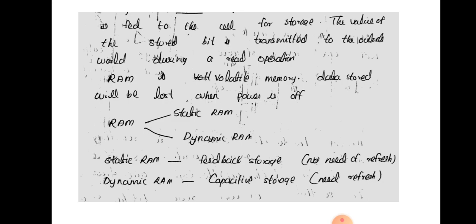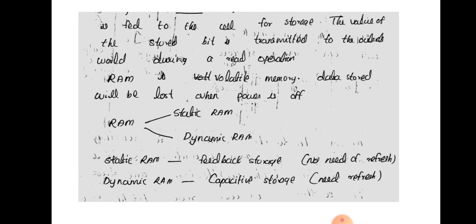In the hold state, the value of the bit is stored in the cell for future use. During a write operation, a logic zero or logic one is written into the memory for storage. During a read operation, the value of the stored bit is transmitted to the output. RAM is a volatile memory — the data stored will be lost when the power is off.